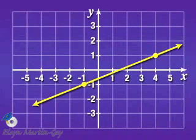In other words, every possible vertical line that I could draw intersects the graph at most once. So this does pass the vertical line test — it is the graph of a function.